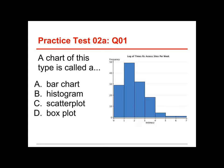Here's the first question. A chart of this type is called what? A bar chart, a histogram, a scatter plot, or a box plot? Well, this kind is called a histogram.